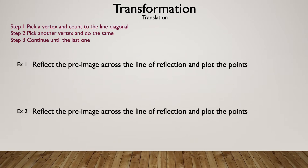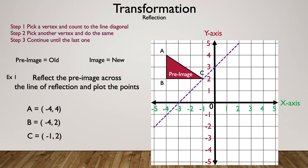These are the two examples we're going to be dealing with today. Let's read the steps so we know how to do it. Step one: pick a vertex and count to the line diagonally. Step two: pick another vertex and do the same. Step three: continue until the last one. Now let's talk about vocabulary — pre-image is your old image. Think of 'prehistoric': 'pre' means before. The image is your new one.